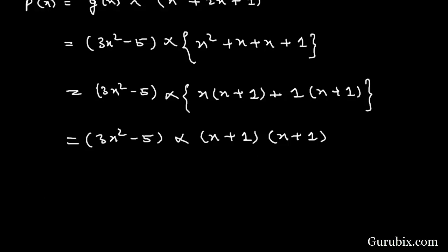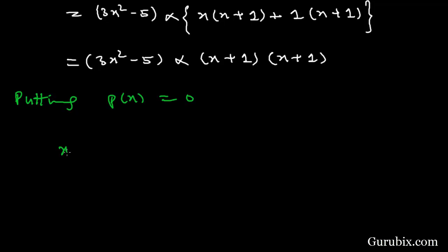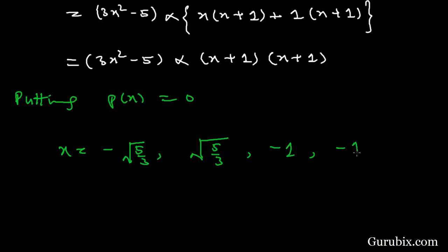Setting P(x) = 0, we get x = √(5/3) and x = -√(5/3) (already known), and x = -1 (repeated, from the double factor (x+1)²). So all four zeros of the given polynomial are √(5/3), -√(5/3), -1, and -1. Thank you.